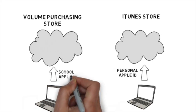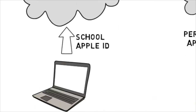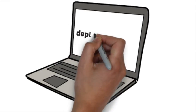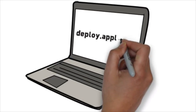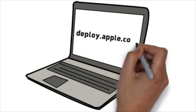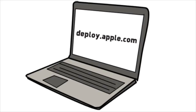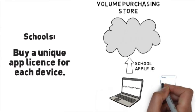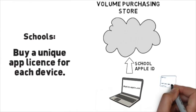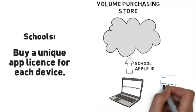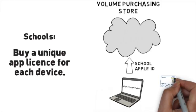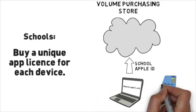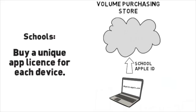The Volume Purchasing Store is accessed using a web browser at deploy.apple.com. You will need to apply for an account, and once your application has been approved, you can start purchasing licenses in bulk. You can do this either with a credit card or store credit that you can buy with a purchase order from your school.